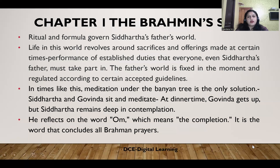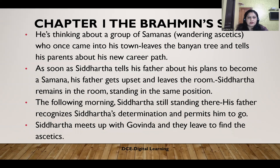Ritual and formula govern Siddhartha's father's world. Life in this world revolves around sacrifices and offerings made at certain times, and the performance of established duties that everyone — even Siddhartha's father — must take part in. The father's world is rigid and regulated according to certain accepted guidelines. Meditation under the banyan tree is the only solution for Siddhartha. He and Govinda sit and meditate. At dinner time, Govinda gets up but Siddhartha remains in deep contemplation, reflecting on the word 'Aum' — which means completion and concludes all Brahman prayers. He thinks about a group of Samanas — wandering ascetics — who once came into his town, and suddenly decides to tell his father he wants to join them.